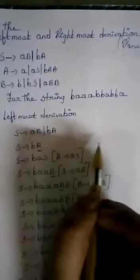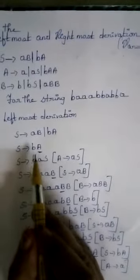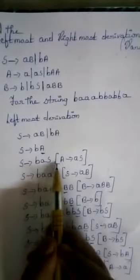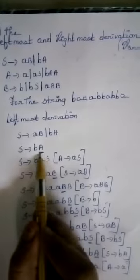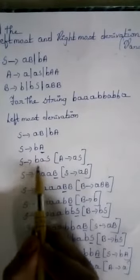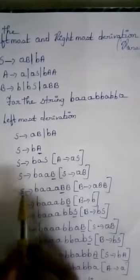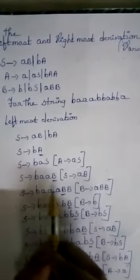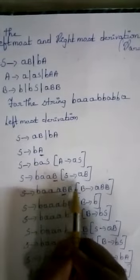First we have to consider the leftmost derivations. S turns to AB or BA. For S turns to BA, we have to consider because the first string is B, so we are considering S turns to BA. Finding the leftmost derivation: S turns to BAS because A turns to AS. Then S turns to BAAB. From S we have to consider S turns to AB.